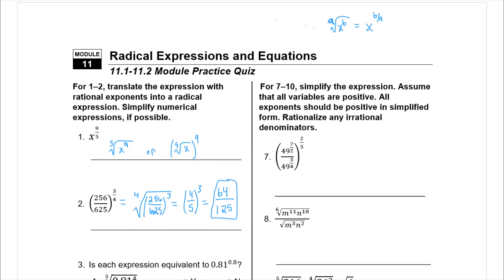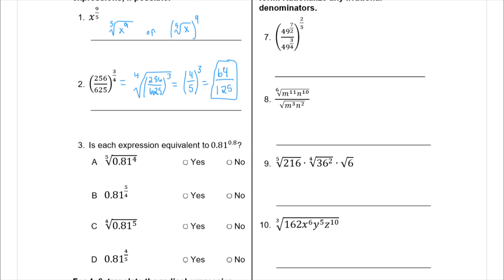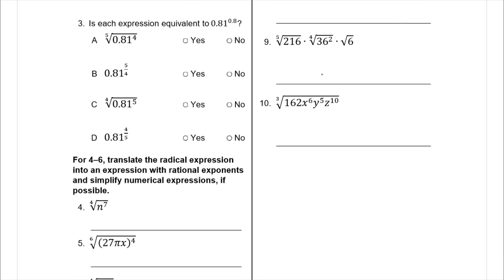Because I can't simplify the fraction 4/5, I won't be able to simplify 64 over 125 — the top is 4×4×4 and the bottom is 5×5×5 with no common factors. The instructions say to simplify numerical expressions if possible, and I was able to simplify them, so I was supposed to.